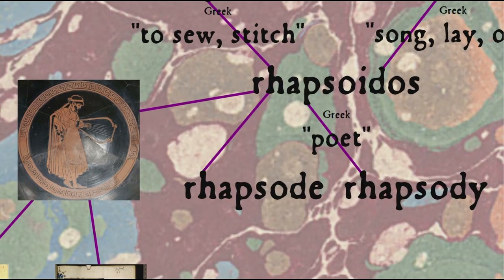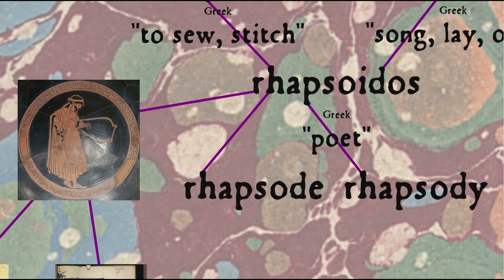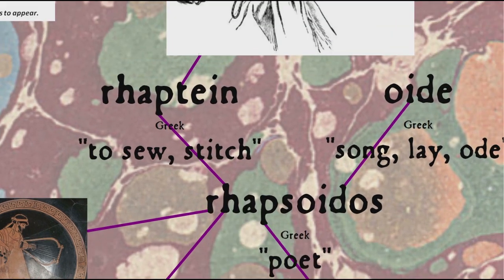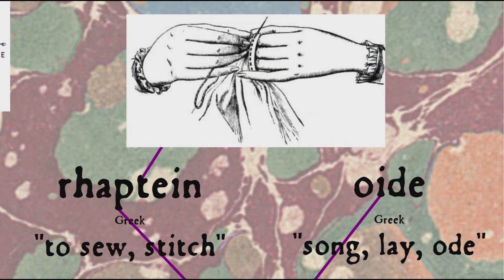In addition to poetes, another Greek word for an oral poet was rhapsodos, from which we get the word rhapsody. The word rhapsodos, or rhapsode in English, is a compound of the words raptain, to sew or stitch, and oide, meaning song, lay, or ode — so literally a sewer of songs. A not uncommon metaphor for poetry, because of that formulaic nature of oral poetry.